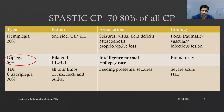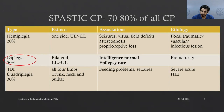In diplegia, bilateral involvement is present but lower limbs are predominantly affected. Hand functions are relatively preserved and intelligence is usually normal. Epilepsy is quite rare in diplegia because the periventricular white matter is the affected region. They may have associated cerebral visual impairment. Spastic diplegia is caused primarily by prematurity. Total body involvement or quadriplegia is associated with severe feeding problems and intractable seizures, caused by severe acute hypoxic ischemic encephalopathy.